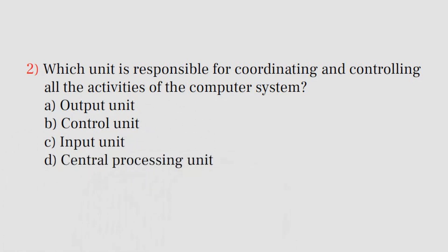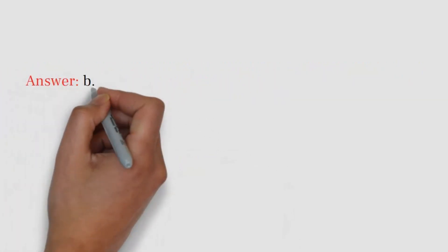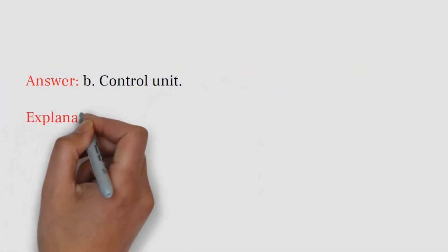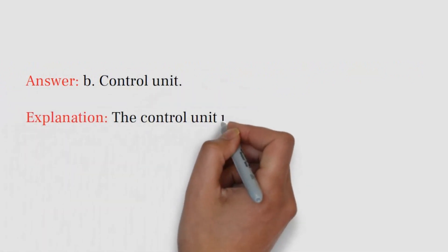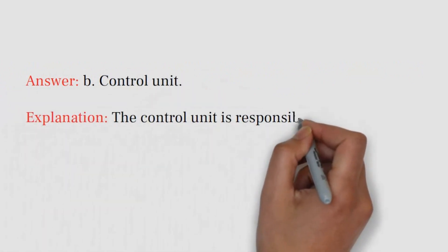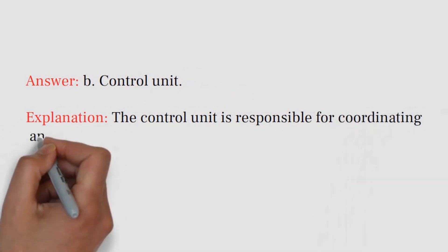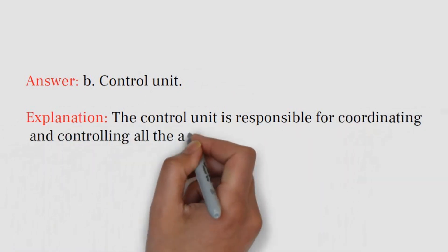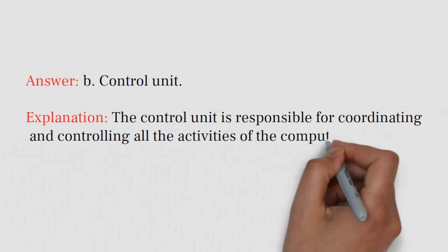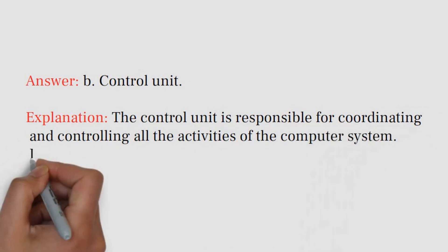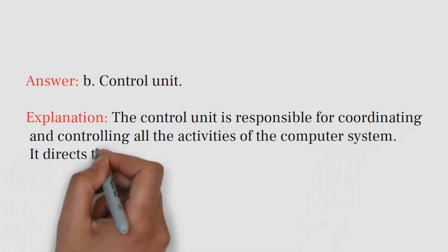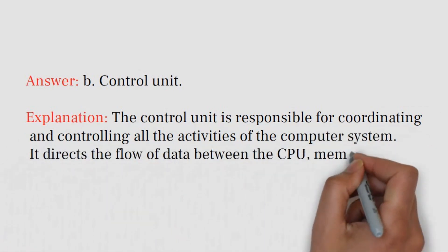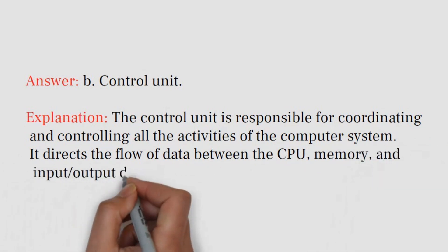Answer: B. Control unit. Explanation: The control unit is responsible for coordinating and controlling all the activities of the computer system. It directs the flow of data between the CPU, memory, and input/output devices.